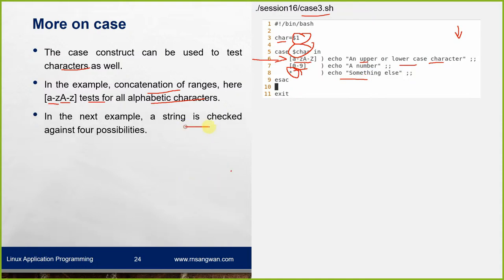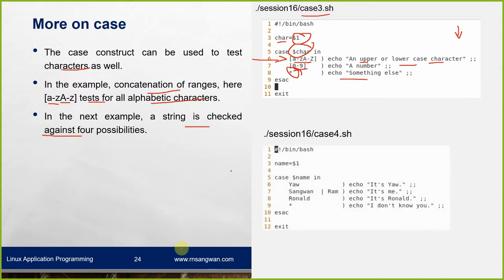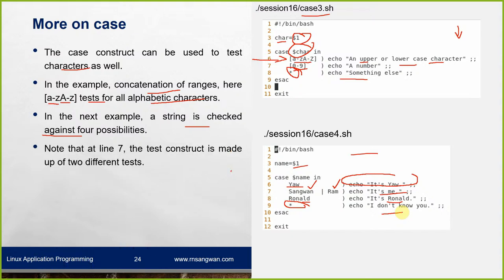A more interesting example: a string is checked against four possibilities. name=$1 — passed as a command line argument. case name in: yow matches 'it's yow'; sanguan|ram (using pipe for OR) matches 'it's me'; ronald matches 'ronald'; and the default is 'I don't know'. At line 7, the test is made up of two different tests combined with logical OR within the case construct.